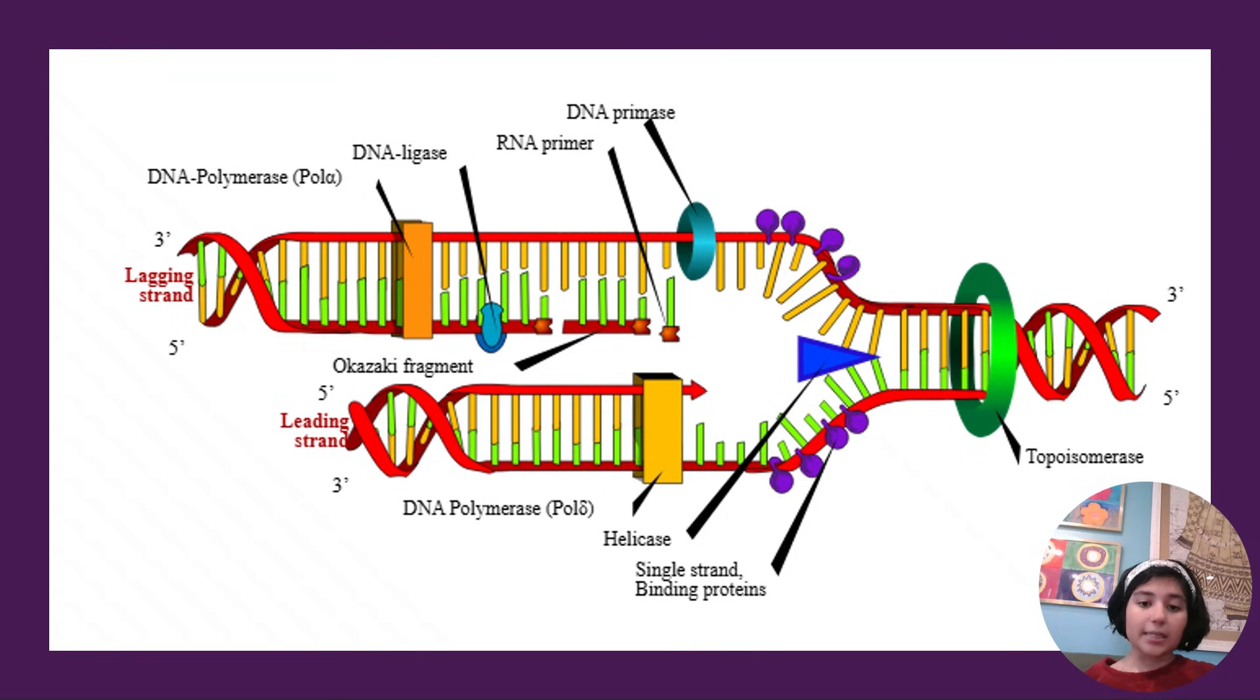So that means this top strand is being made from 3 prime to 5 prime, and that's a problem because since new nucleotides are only added to the 3 prime end, it's getting made this way and that's not what we want. So that's why this is called the lagging strand. So this DNA strand will have to be made in fragments called the Okazaki fragments.